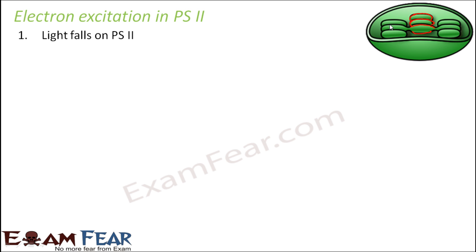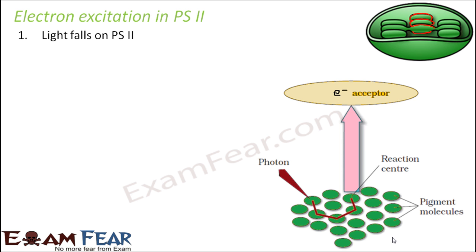What happens when light falls on PS2? The light energy, or suitable wavelength, is absorbed by all the accessory as well as the necessary pigments. The accessory pigments pass whatever light energy they absorb to the reaction center, which contains the main chlorophyll A molecule. In PS2, it is P680 — chlorophyll A that is good at absorbing 680 nanometer wavelength of light, which is the red color. This pigment absorbs red light, but other pigments also absorb portions of other wavelengths and transfer all that energy to the reaction center.